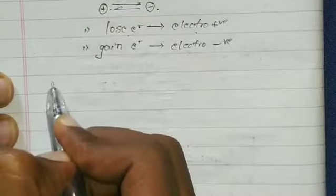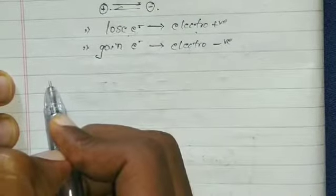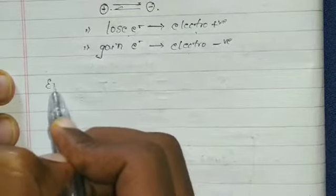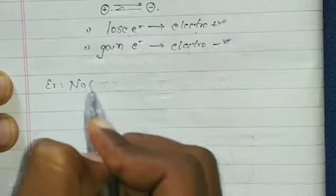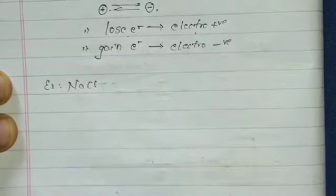The atom which loses electrons is called electropositive. The atom which gains the electron from the other atom is called electronegative, because when gaining electrons it becomes negative in charge. When it loses electrons, it becomes positive. Let's consider the example of NaCl.